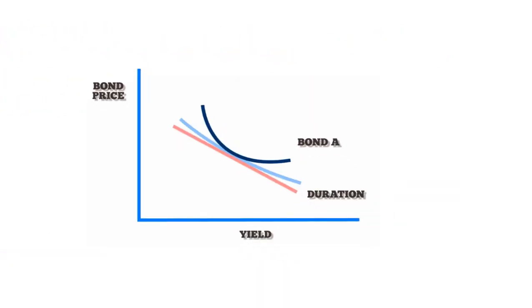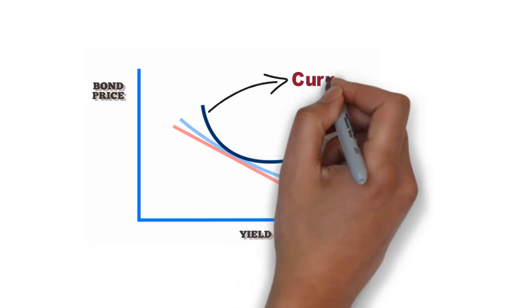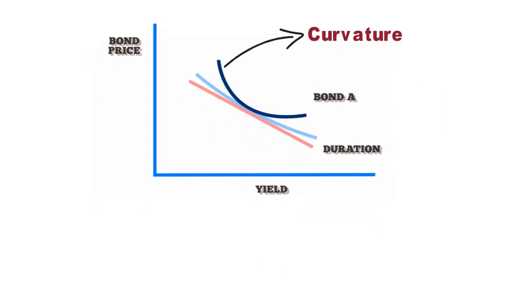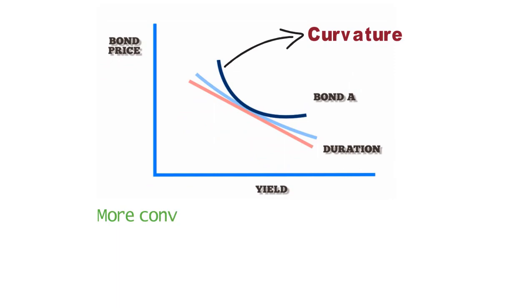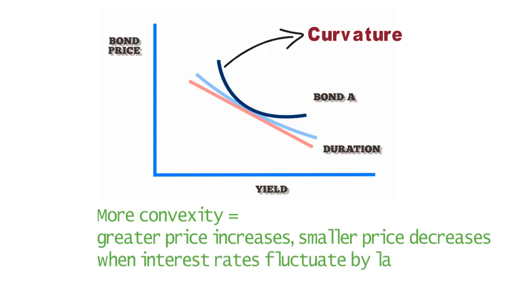Hence, convexity refers to the curvature of the price-yield relationship of a bond. Investors like convexity because more convexity equals greater price increases and smaller price decreases when interest rates fluctuate by a large amount.